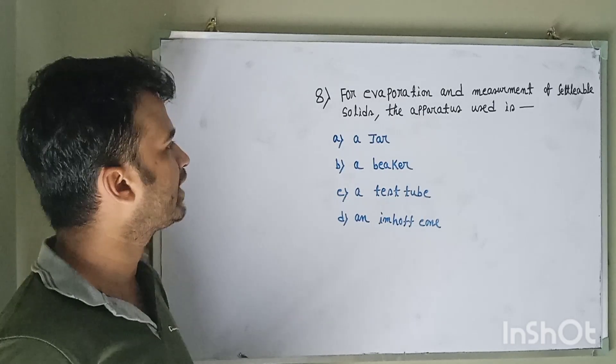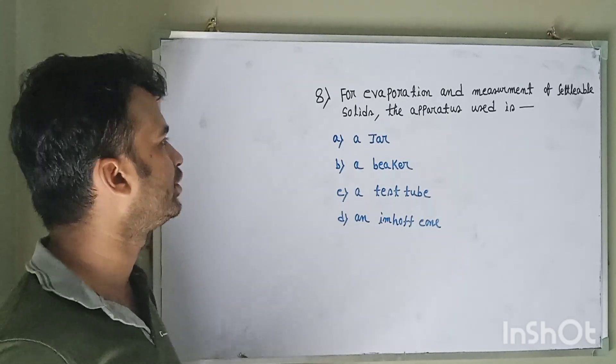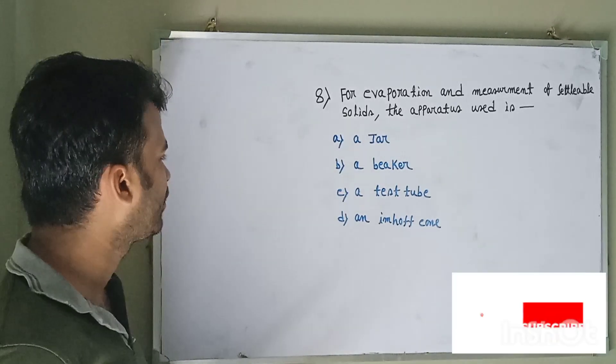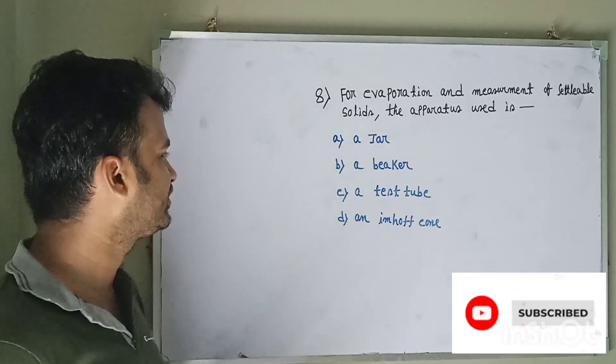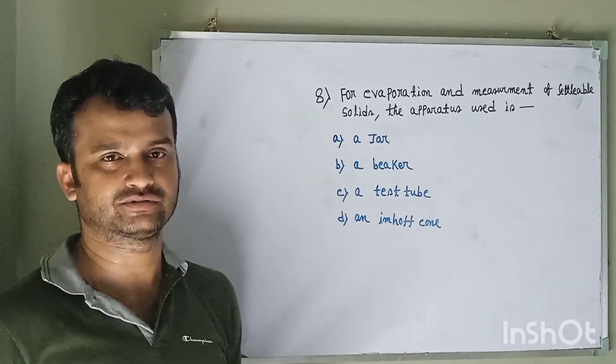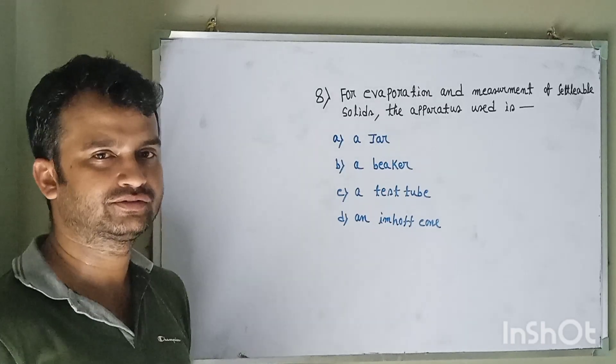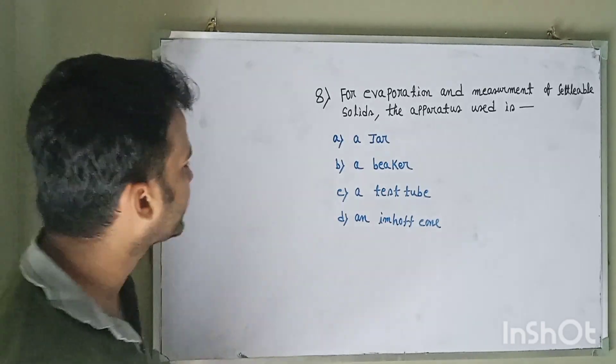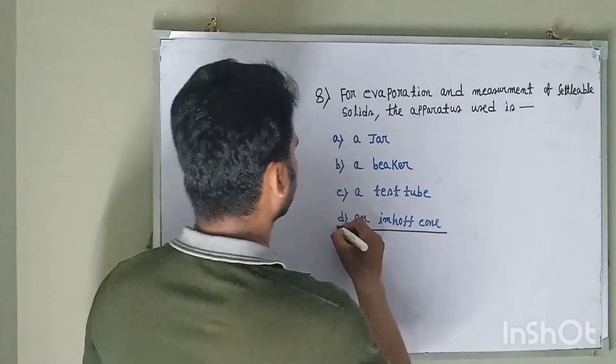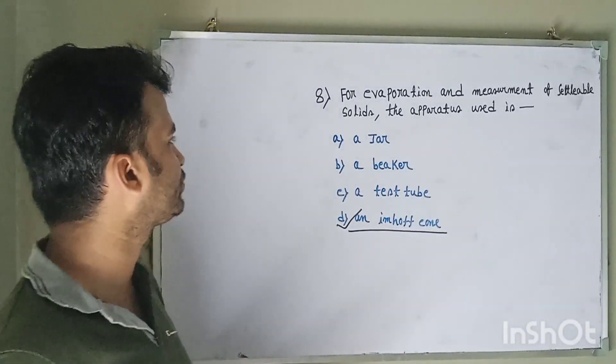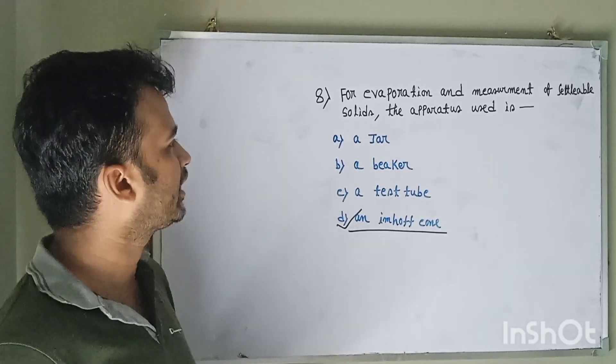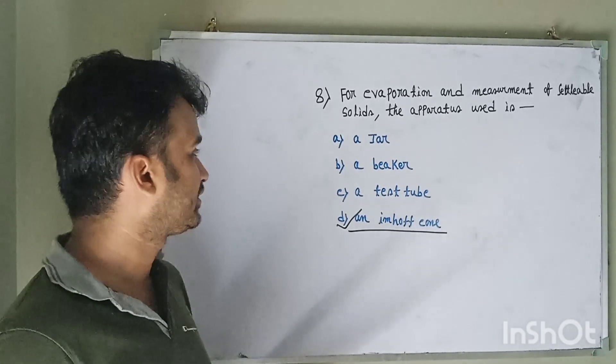Question number eight: For evaporation and measurement of settlable solids, the apparatus used is option A a jar, option B a beaker, option C a test tube, and option D an imhoff cone. The correct answer is an imhoff cone. Generally, an imhoff cone is used to determine the evaporation and measurement of settlable solids.